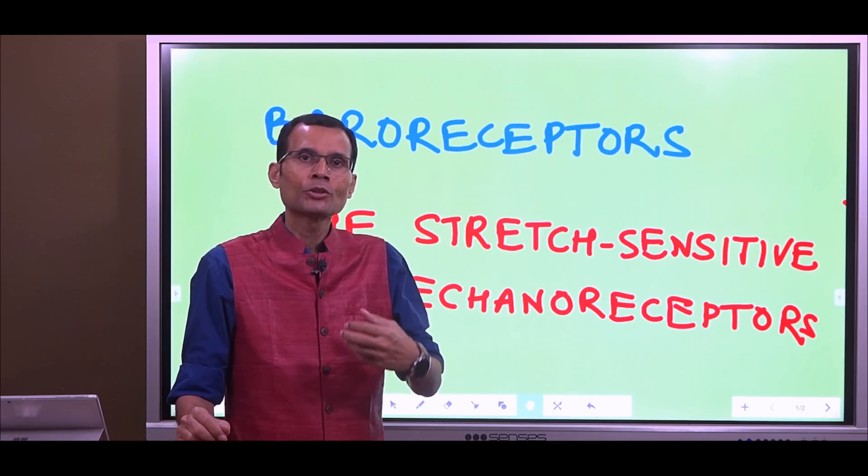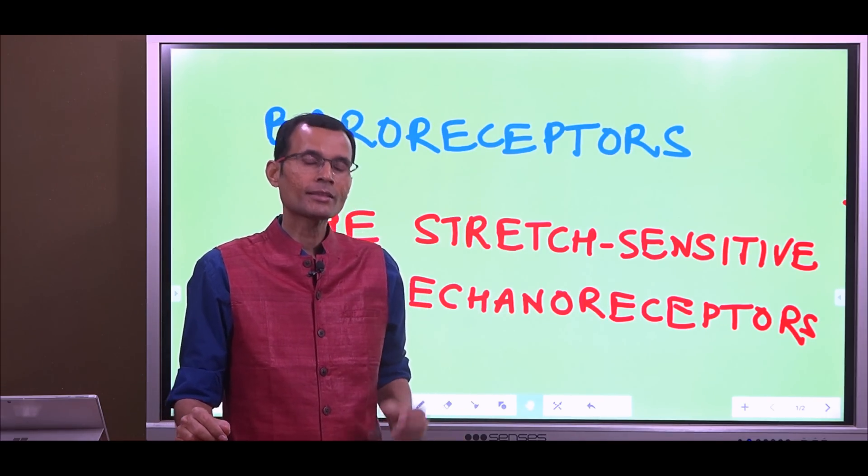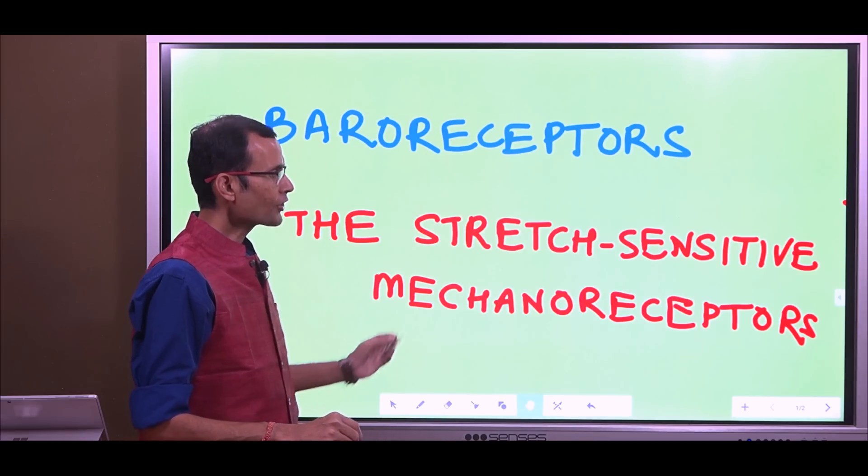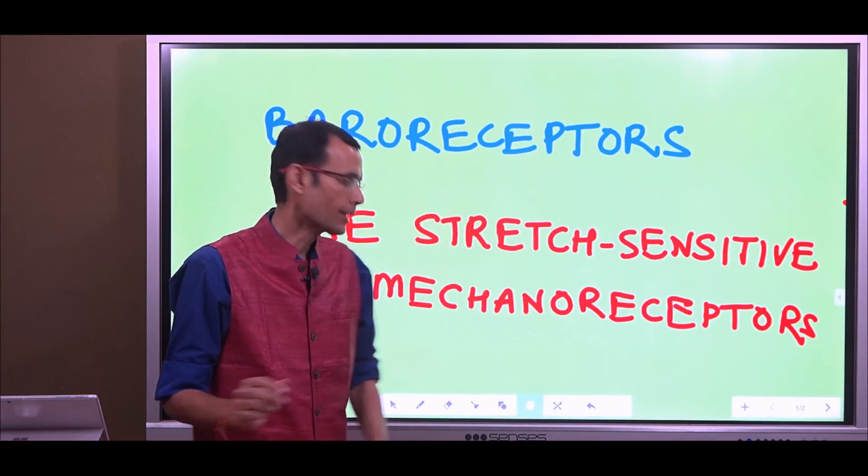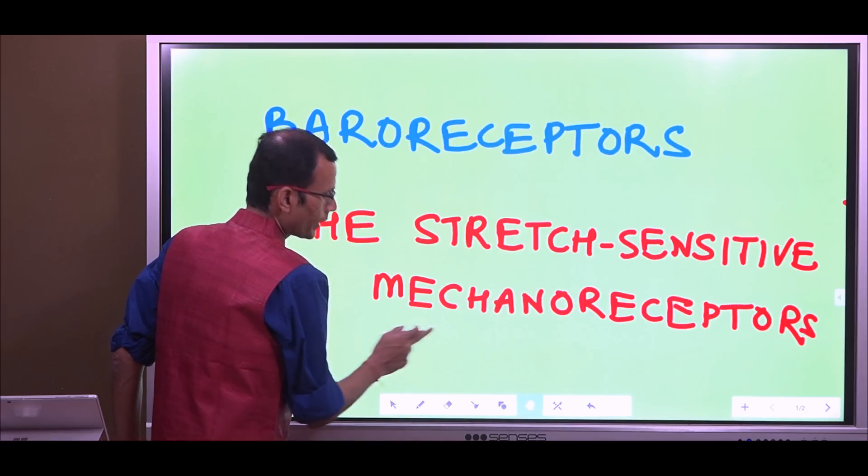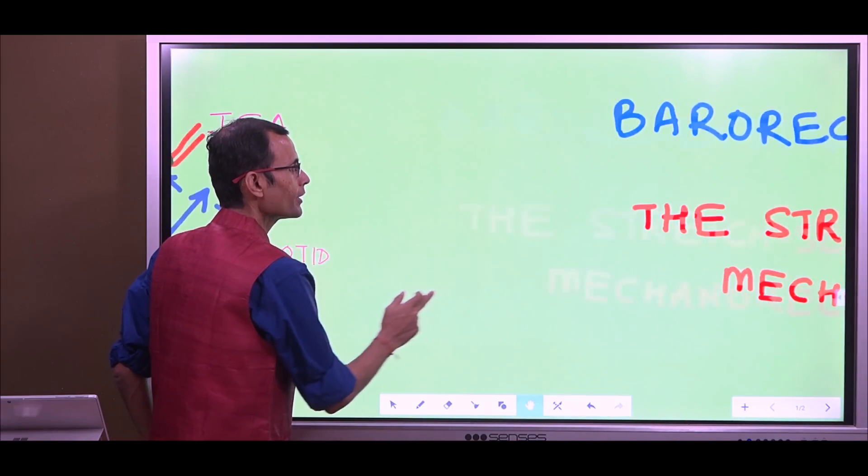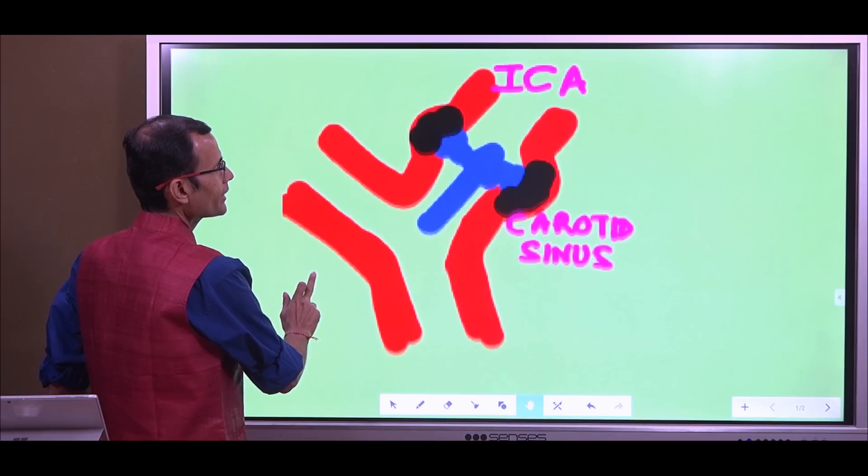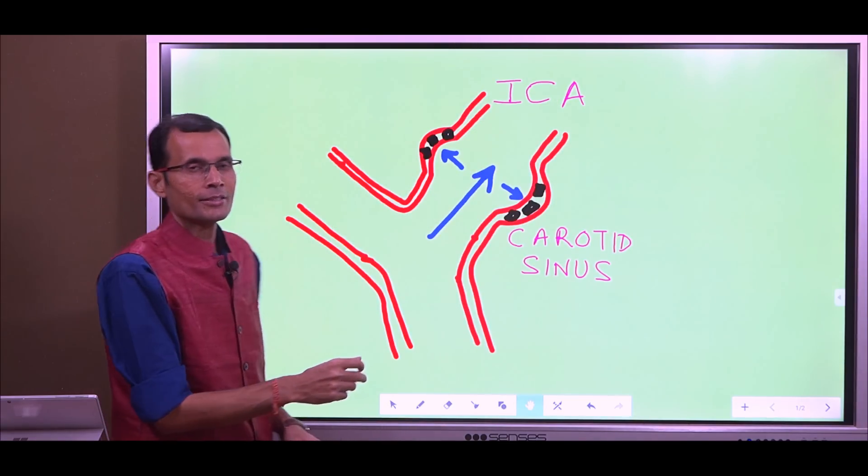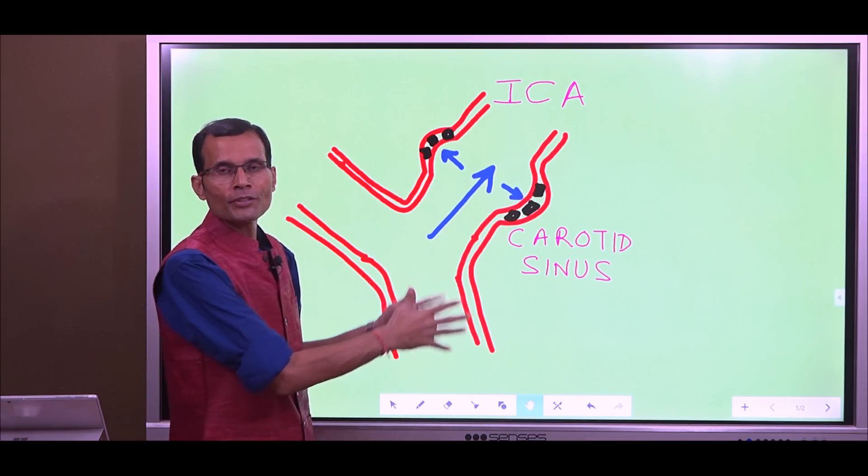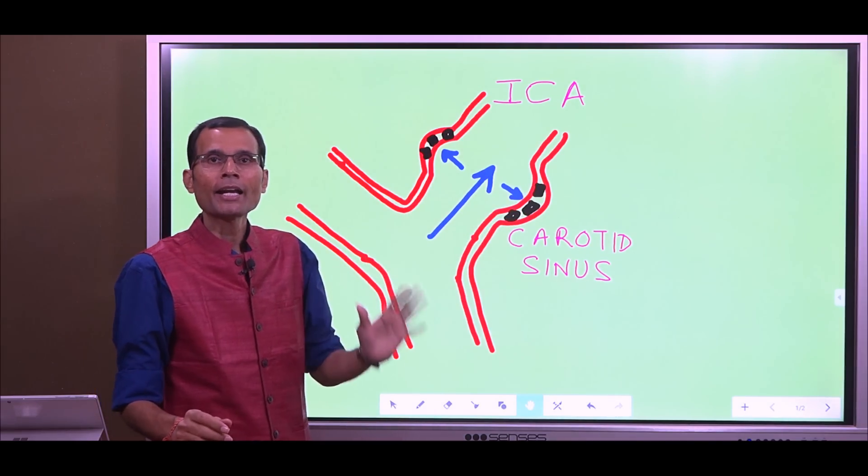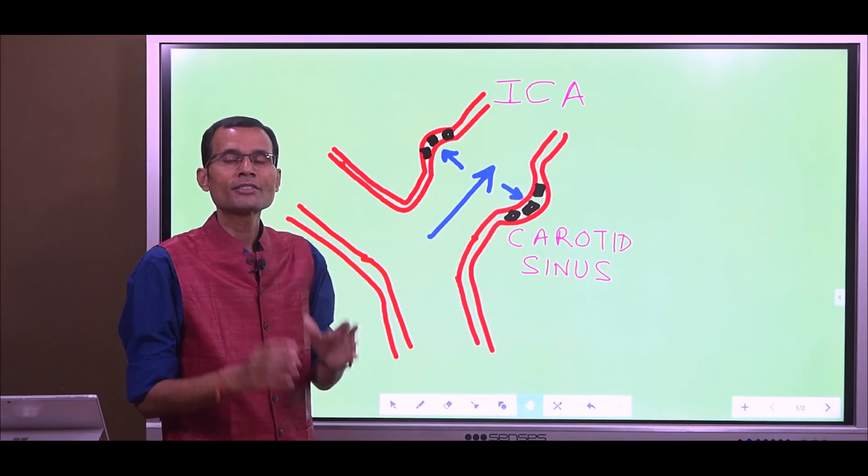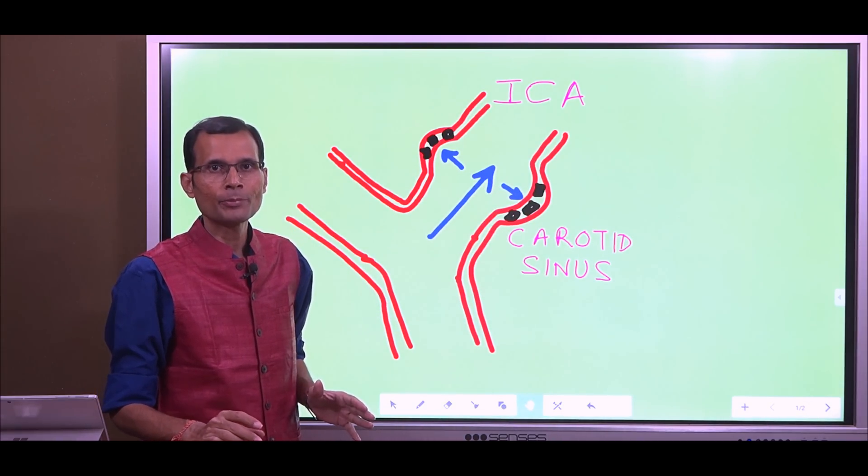They are actually not detecting the pressure changes but they are stretch-sensitive mechanoreceptors. So even though we are saying baroreceptors, baro means pressure, but actually they are not sensing the pressure changes. There is dilation in the wall of the internal carotid artery and in this wall there are these stretch-sensitive mechanoreceptors.